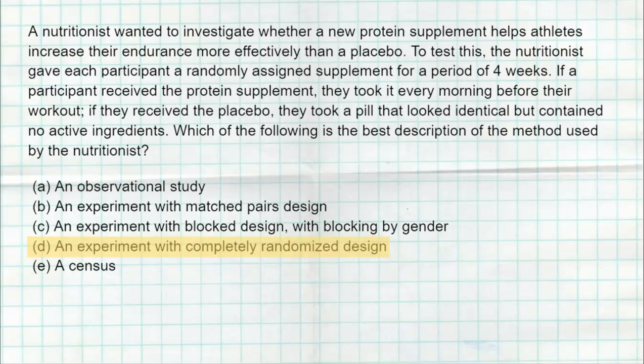Blocking would be if they took the females and males separately — of the males, half got the placebo, half got the nutrient; of the females, half got the placebo, half got the nutrient. That would be blocking based on gender. There was no other variable we were blocking on. Nobody was matched — it wasn't like everybody took the pill for a week and then took the placebo for a week, which would be a matched pair design. Not an observational study because everybody was given something to take.